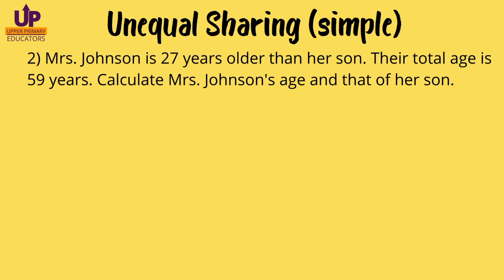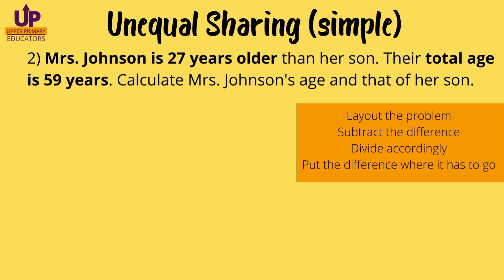Mrs. Johnson is 27 years older than her son. Their total age is 59 years. Calculate Mrs. Johnson's age and that of her son. We know it's unequal sharing because one person has a greater amount than another. As always, we underline or highlight important words and details and follow our process: lay out the problem, subtract the difference, divide accordingly, and put the difference where it has to go.